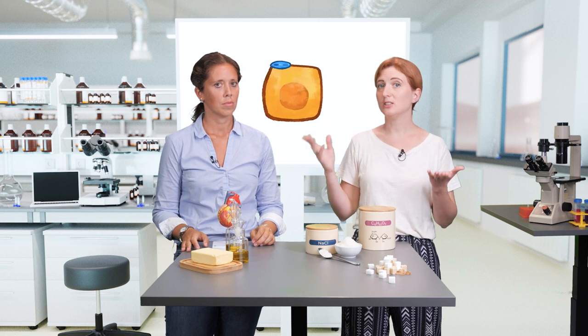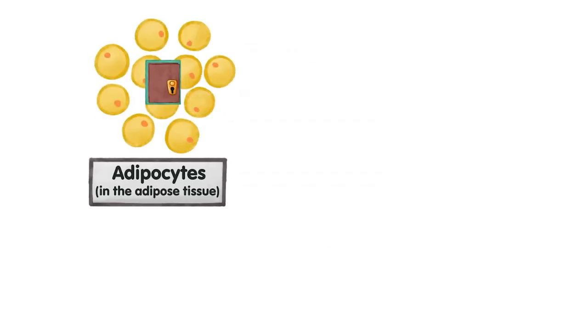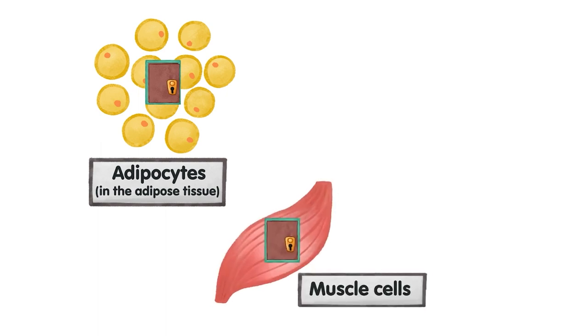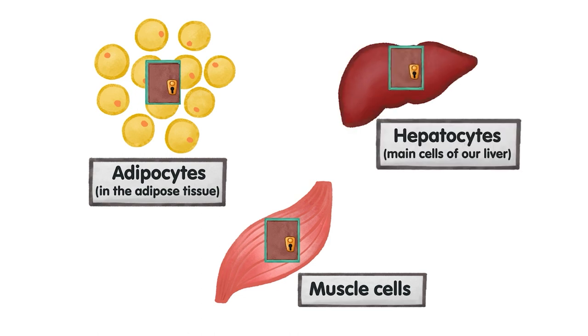But not all cells in our body have the same locks, which means only certain cell types are insulin-sensitive cells, because they have insulin receptors. Those are, for example, adipocytes, which are the main cells in the fat tissue or adipose tissue, the muscle cells, and also the hepatocytes, which are the main cells of our liver.